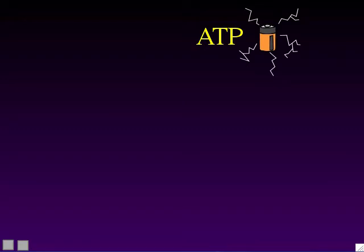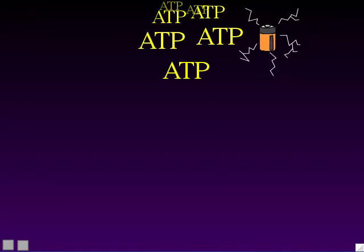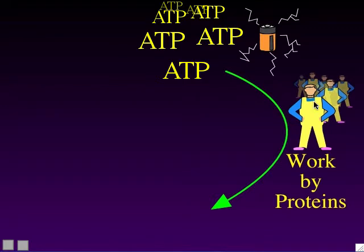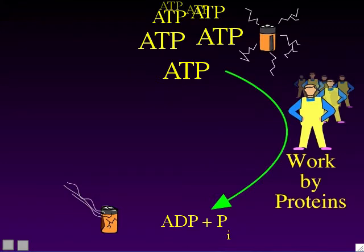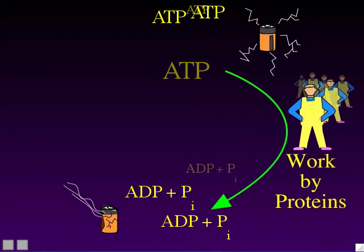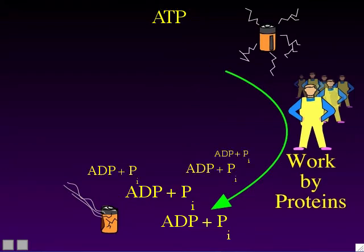ATP when used for energy gets turned into ADP and inorganic phosphate Pi. At that point the energy has been released, so think of ADP as a drained battery. Cells keep a fairly large supply of ATP molecules in their cytoplasm. When proteins need energy to perform their tasks, they grab the nearest ATP molecule, pull off that last phosphate, and that gives them the energy they need — leaving ADP and inorganic phosphate.